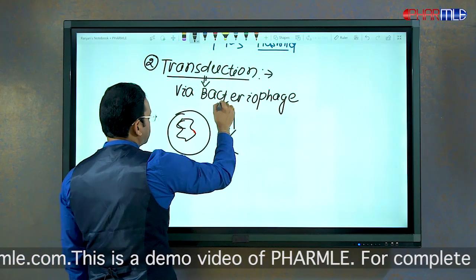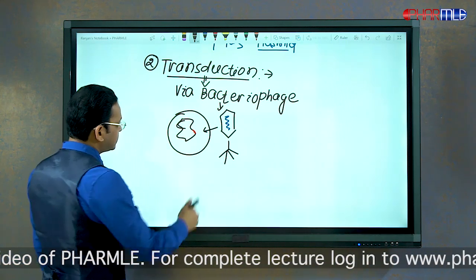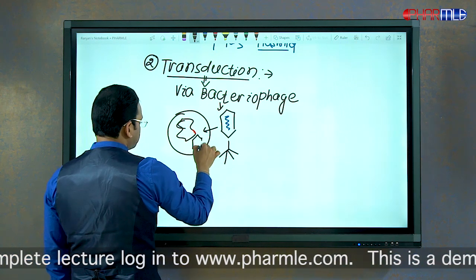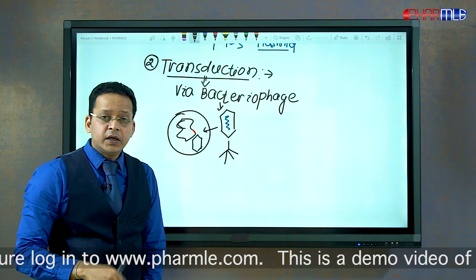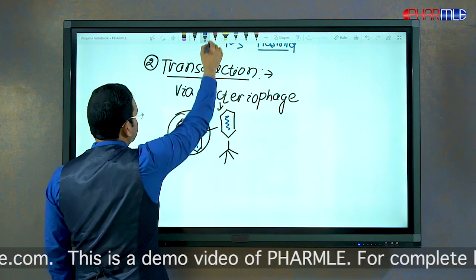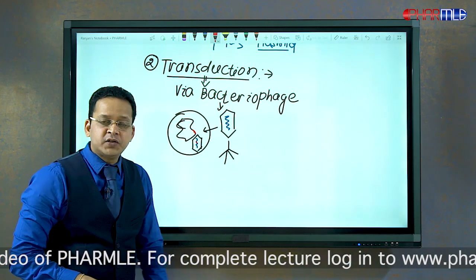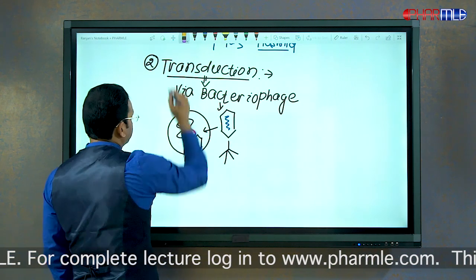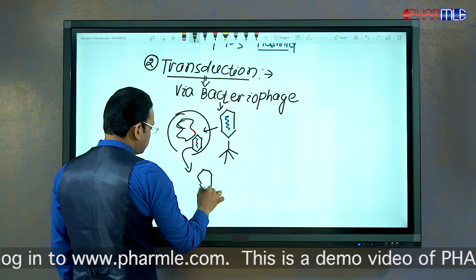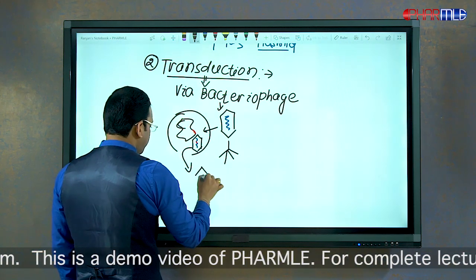A bacteriophage enters the bacterium so that it can replicate. After it enters, it replicates inside the bacteria using its DNA. When multiple copies of the virus DNA are produced, it can take a chunk of the bacterial DNA containing resistance. Finally the bacteriophage breaks down and multiple copies of this bacteriophage are released.